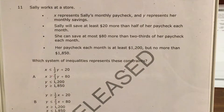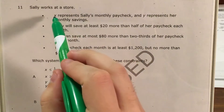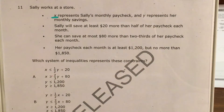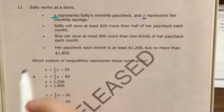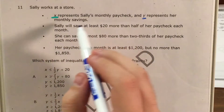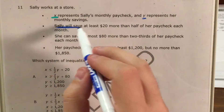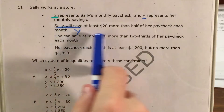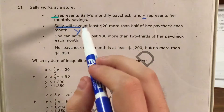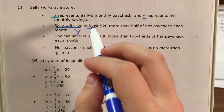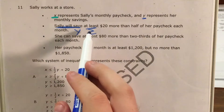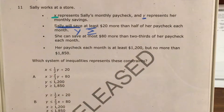So let's go ahead and look at some of the information the problem gives us. First, I'll just make a big note that X is the paycheck and Y is the savings. If I look at my first bullet point when it says Sally will save, that tells me this is a Y equation. I see 'at least,' and at least tells me that Y is going to be greater than or equal to.